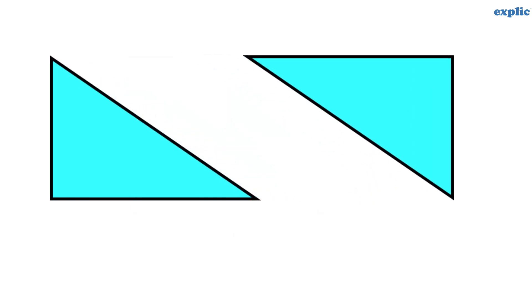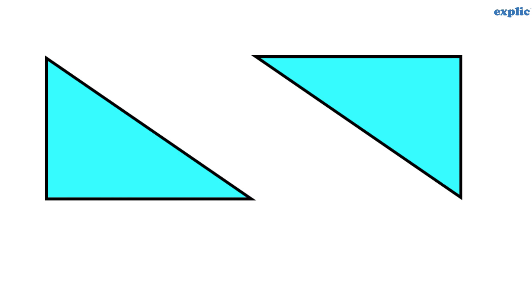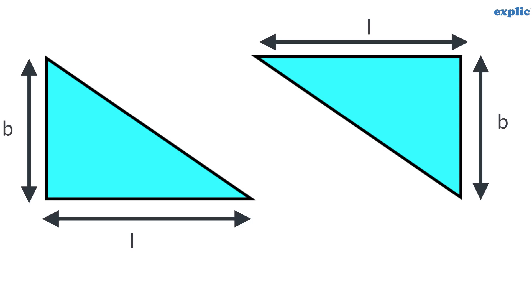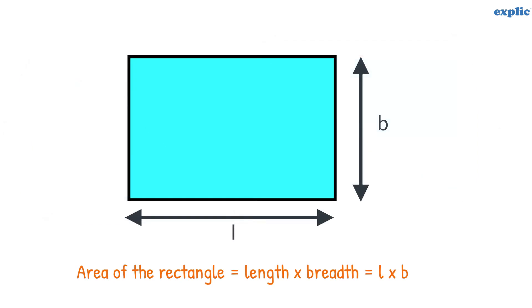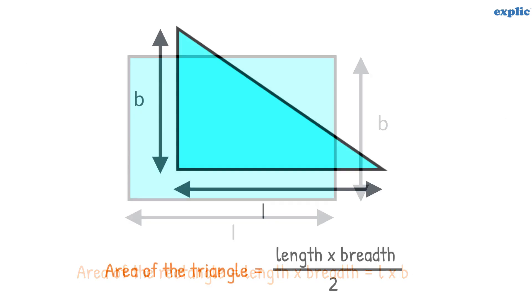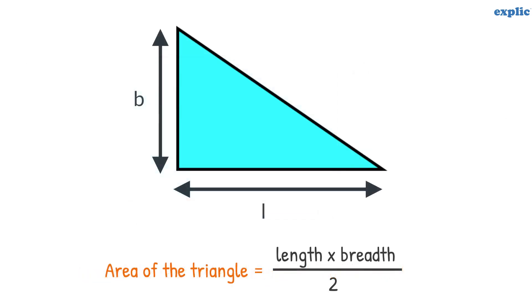Since we have divided the shape into two equal parts, the area is also divided into two equal parts. As we know, the area of the rectangle is length multiplied by the breadth. The area of the one triangle would be length multiplied by breadth divided by 2.